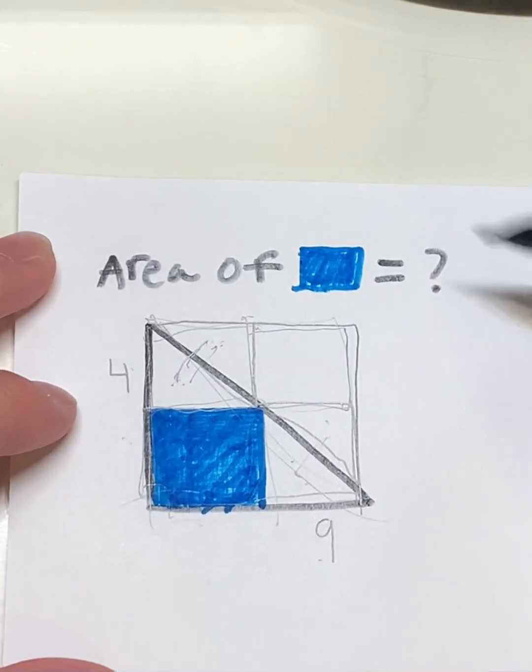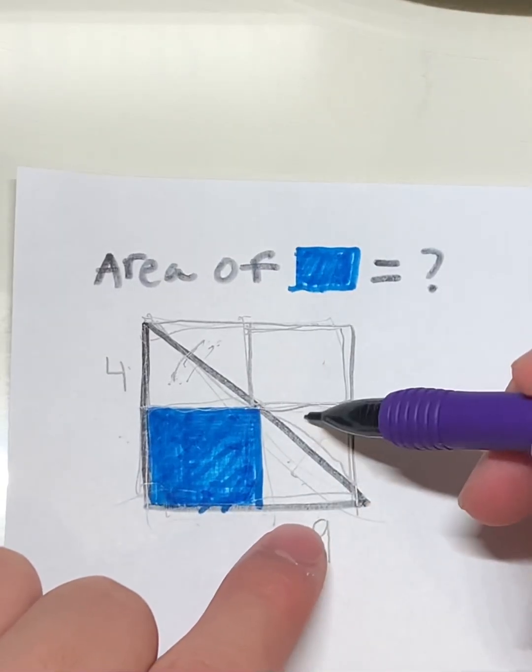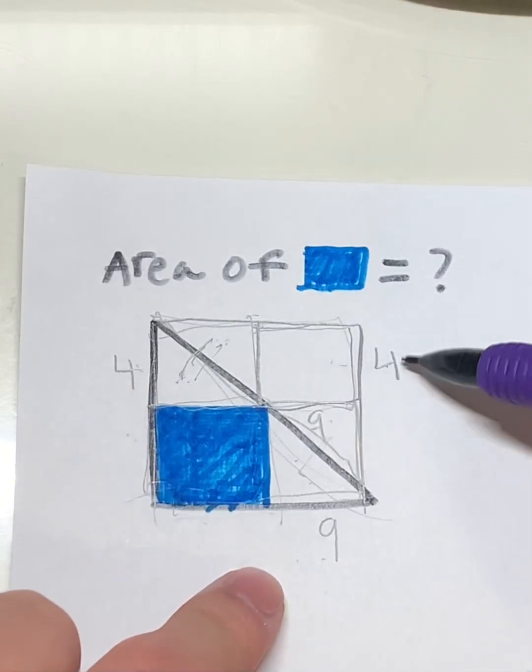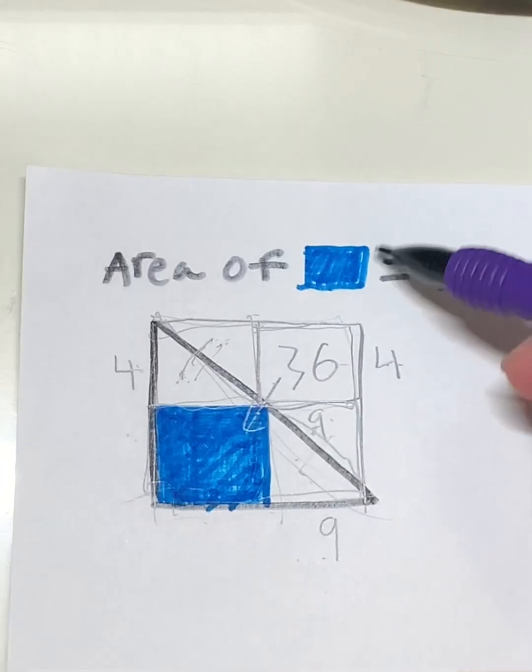So basically, how do we find the area of this box? Well, we know this side length, it's going to be 9. We know this side length, it's going to be 4. 4 times 9, 36. So therefore, this is the area of our blue box.